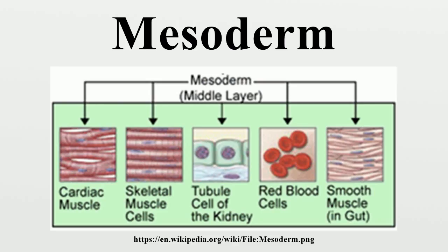When mesoderm cells proliferate, they form the paraxial mesoderm. On each side, the mesoderm remains thin and is known as the lateral plate. The intermediate mesoderm lies between the paraxial mesoderm and the lateral plate. Between days 13 and 15, proliferation of extraembryonic mesoderm, primitive streak, and embryonic mesoderm takes place. The notochord process occurs between days 15 and 17, and the development of the notochordal canal and axial canal takes place between days 17 and 19, when the first three somites are formed.